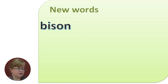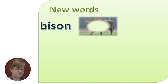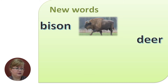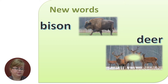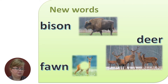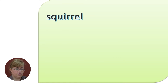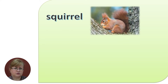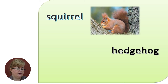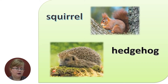The first one is bison. I will not give the explanation, just a picture. This is a bison. Deer. And fawn — you have the picture of a fawn. The next three animals: we have a squirrel, I hope you know what a squirrel is. Hedgehog.